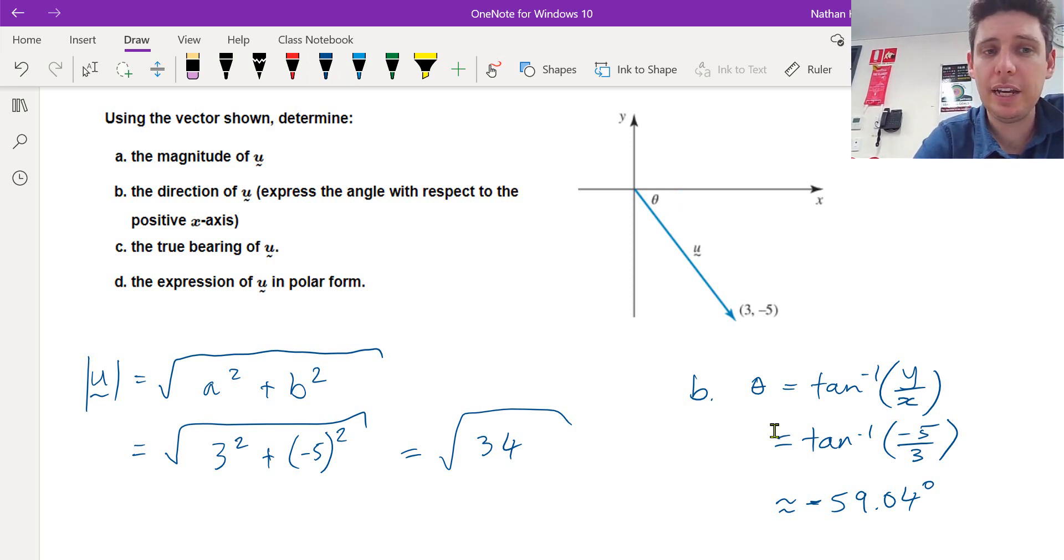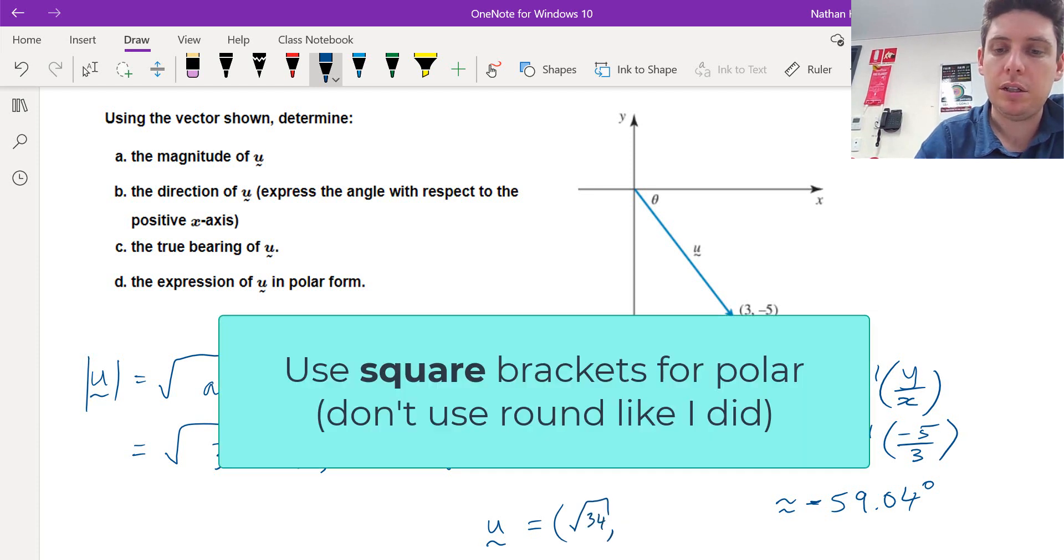So that's the magnitude and direction. We've turned it into polar form. So u is equal to square root 34, negative 59.04.